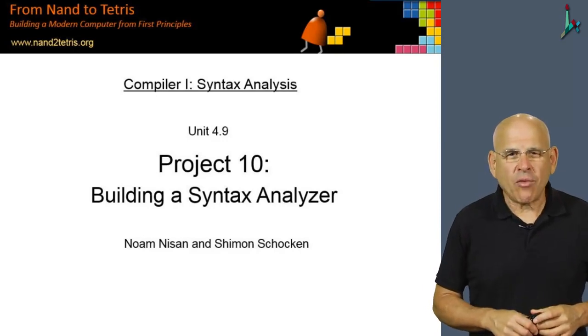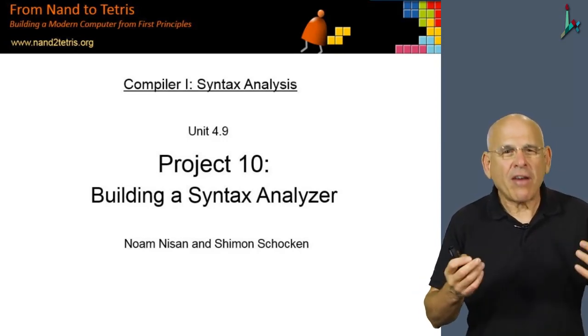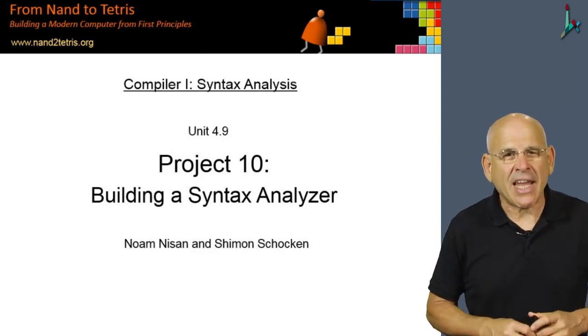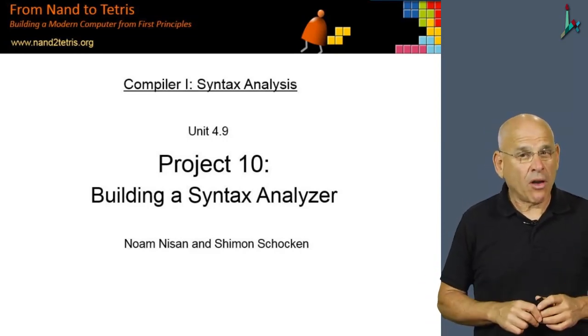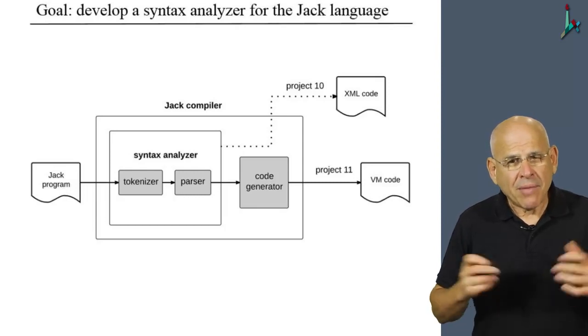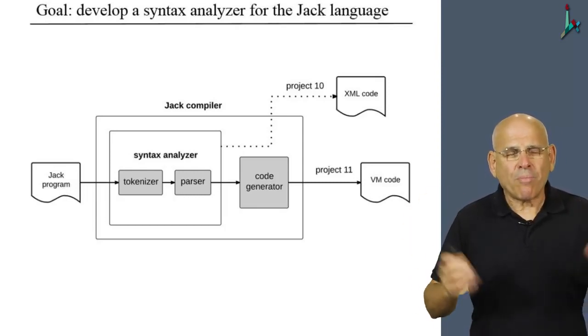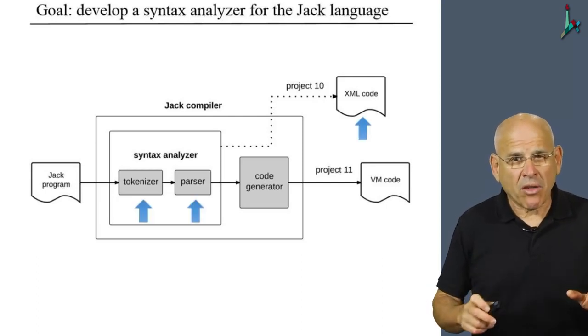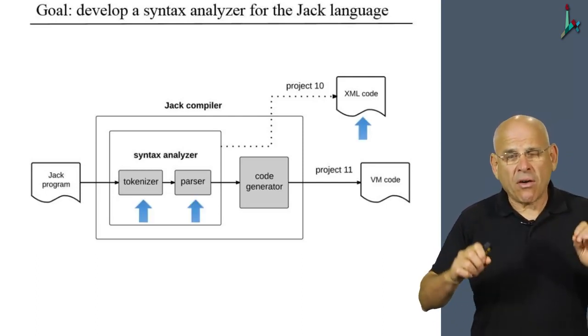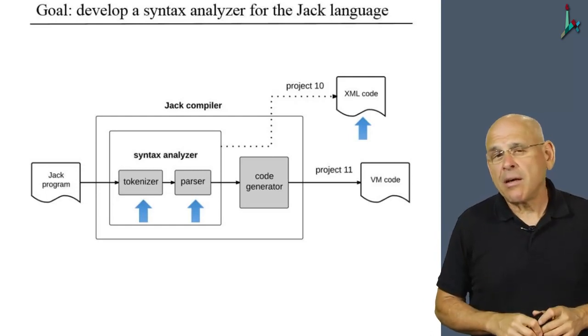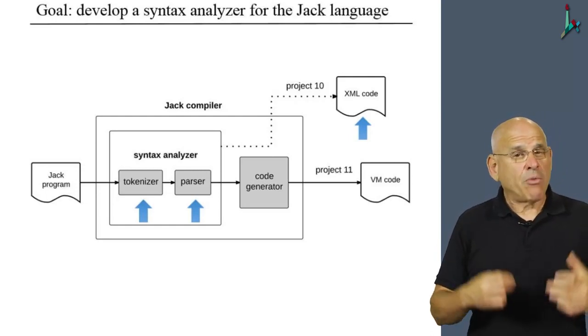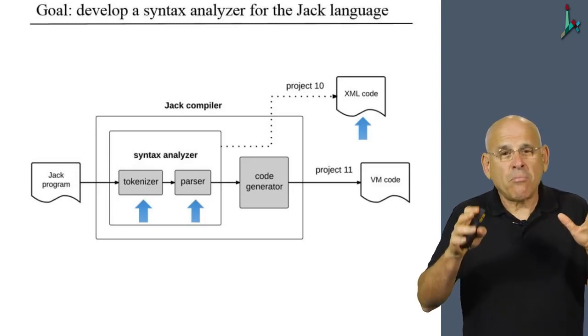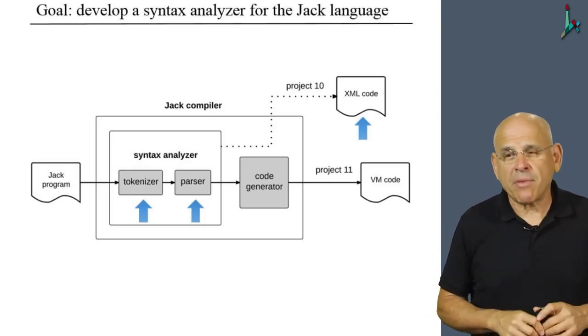Welcome to Unit 4.9, in which we will finally get our hands dirty and set out to develop the syntax analyzer that we described all along. Let me remind you the overall picture of what we are doing. We are developing a Jack compiler, and in this module we are focusing on the syntax analyzer part of the compiler. We are faced with a challenge of unit testing this module separately from the rest of the system.